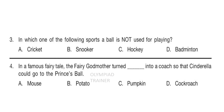Question 3: In which of the following sports is a ball not used for playing? Answer is option D — Badminton. Question 4: In a famous fairy tale, the fairy godmother turned a pumpkin into a coach so that Cinderella could go to the prince's ball. Answer is option C — Pumpkin.